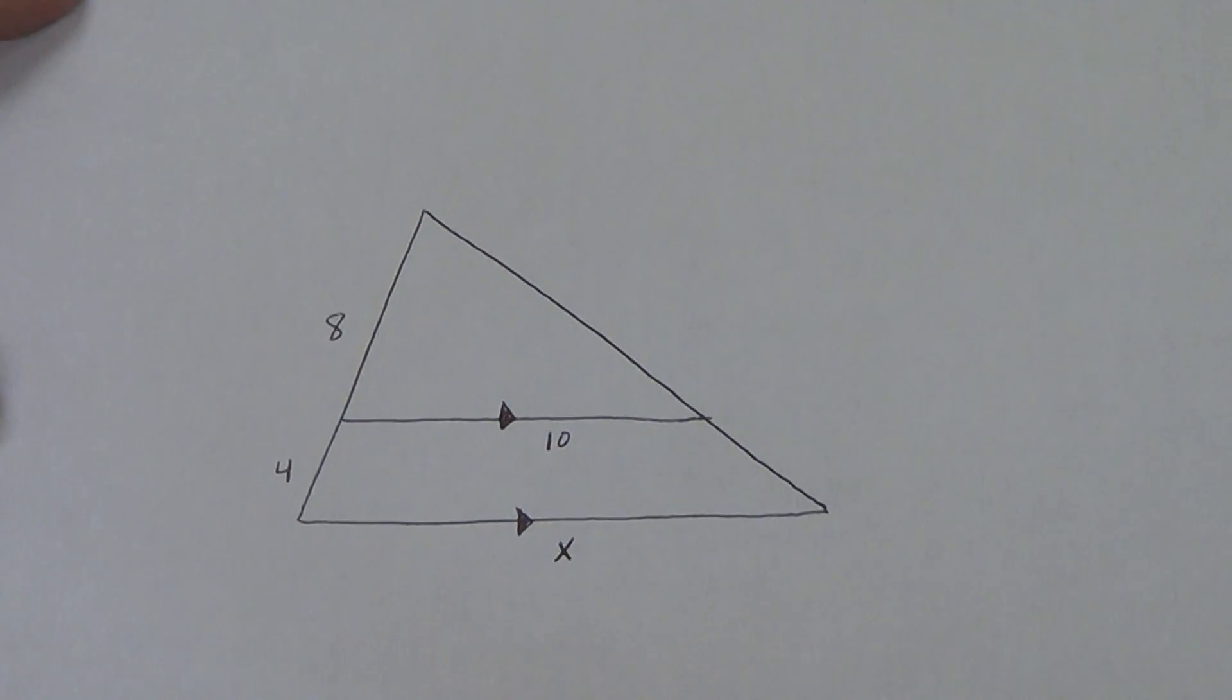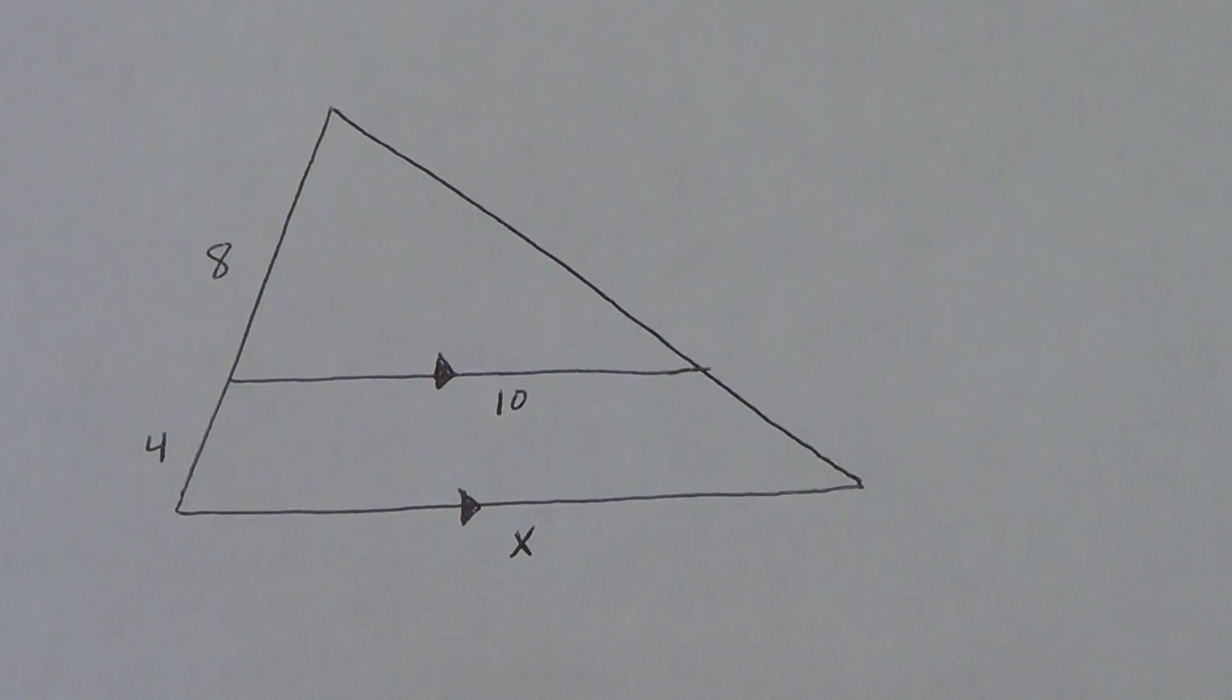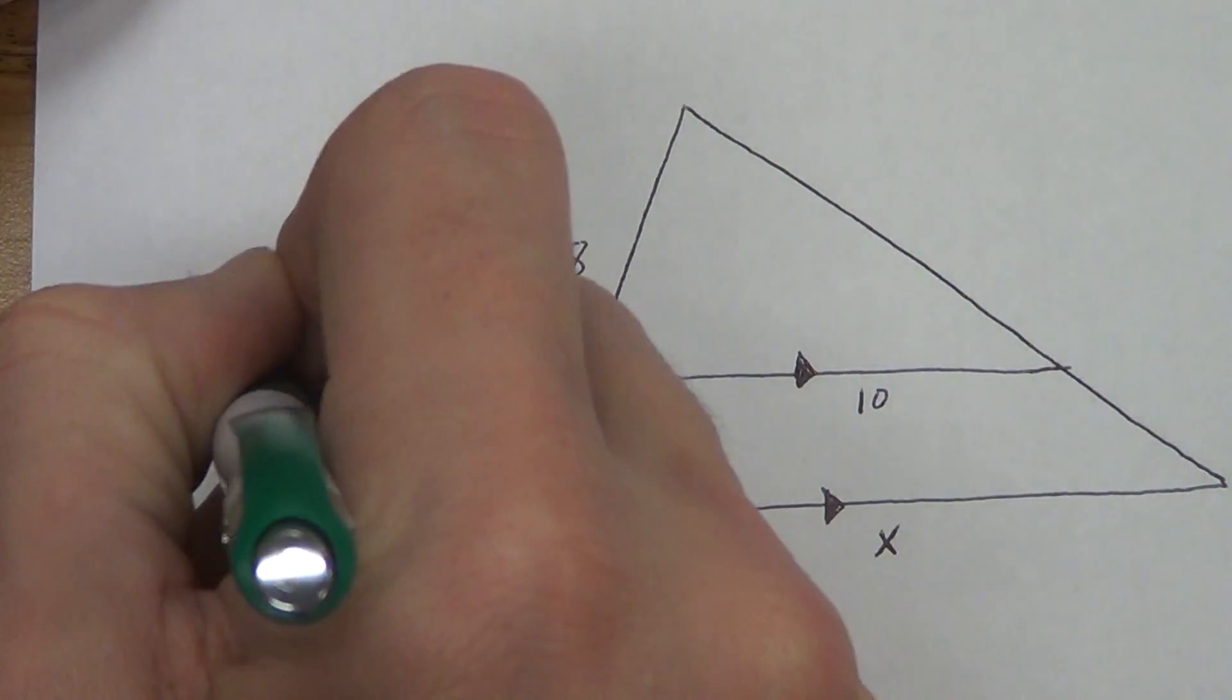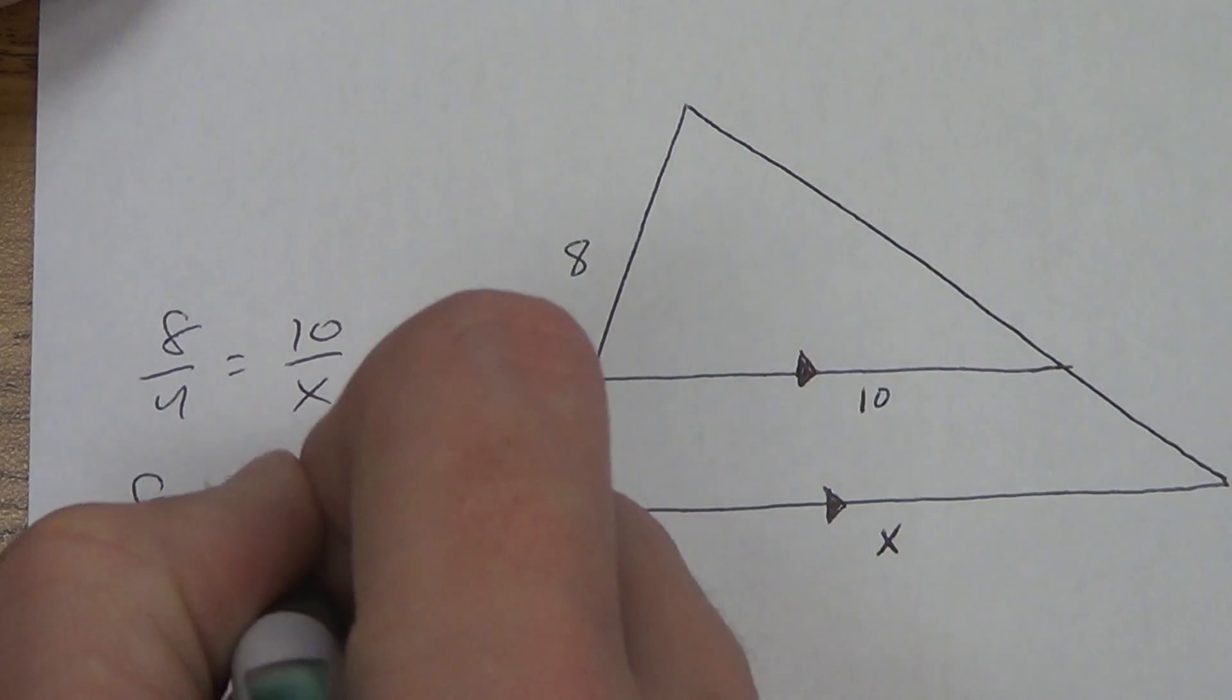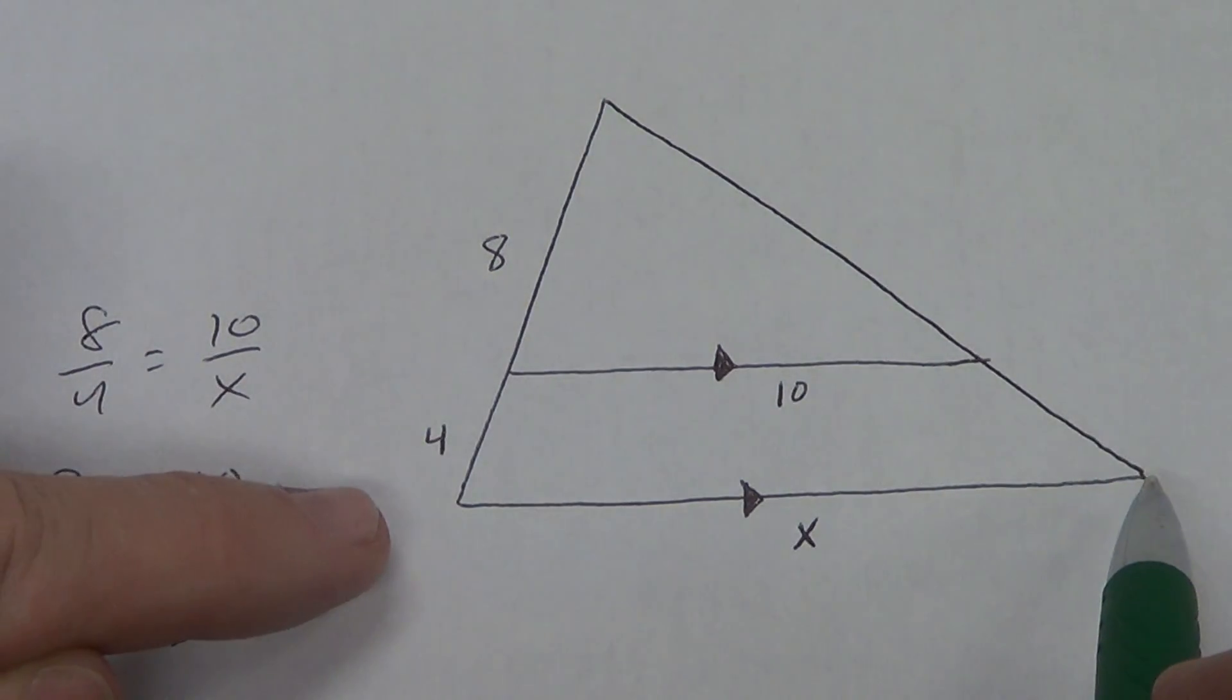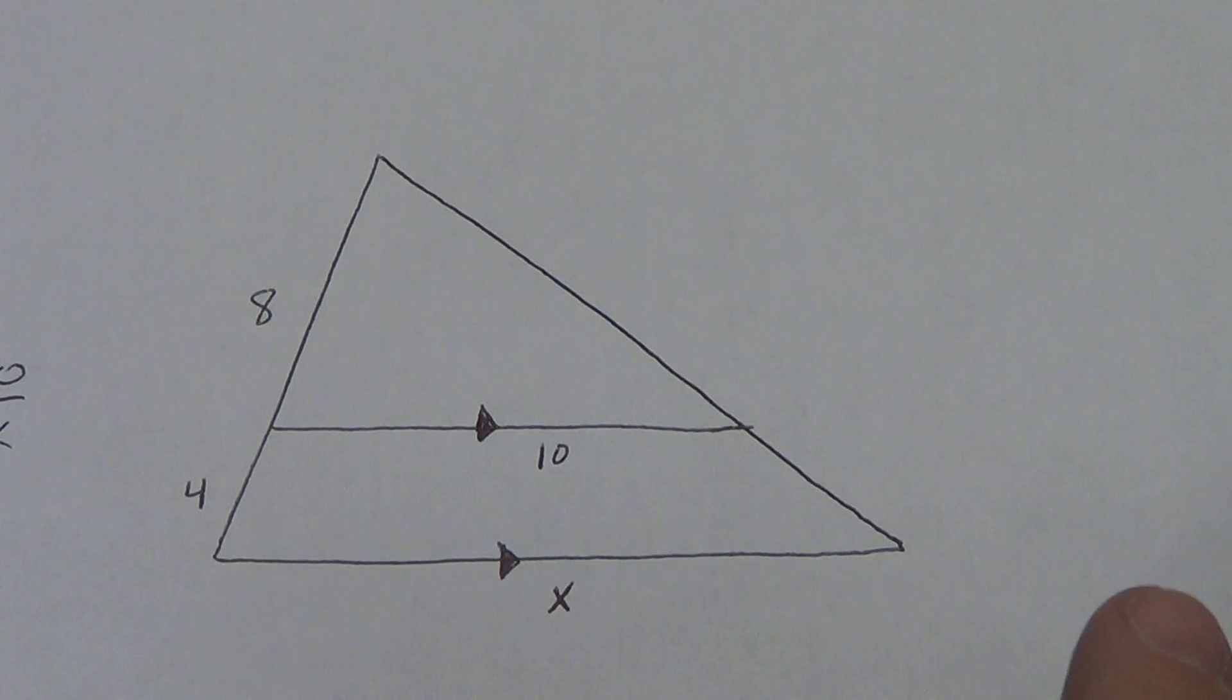Last one. And this one's a little different. You've got to be careful on this one. If you try to set this one up as 8 over 4 equals 10 over x, you're going to get it wrong. And that's probably what a lot of you were thinking right away. Let me show you why I know it's wrong. I'm going to set that proportion up: 8 over 4 equals 10 over x. I'm going to cross multiply. 8x equals 40. Divide by 8. And I get x equals 5. There is no way this can be 5. This was 10. These are getting farther away from each other as I go. That means this has to be bigger than 10.